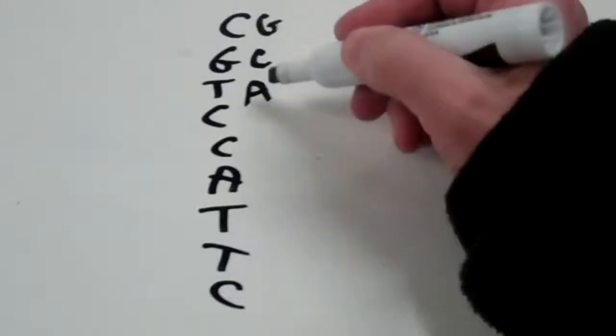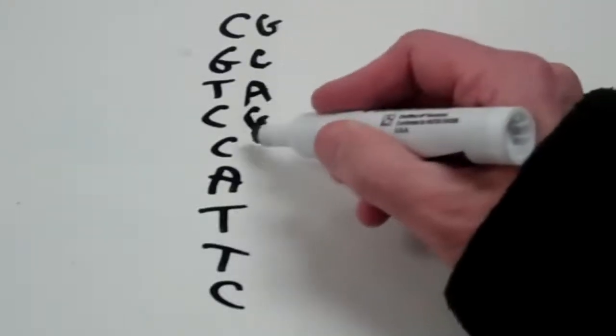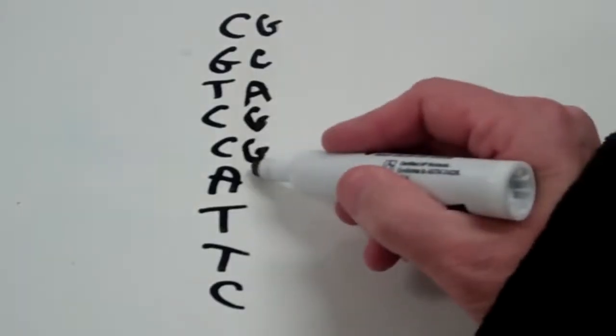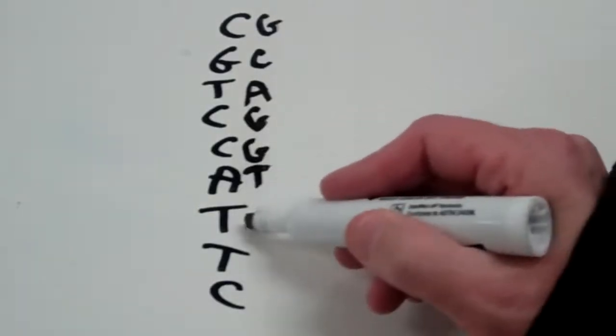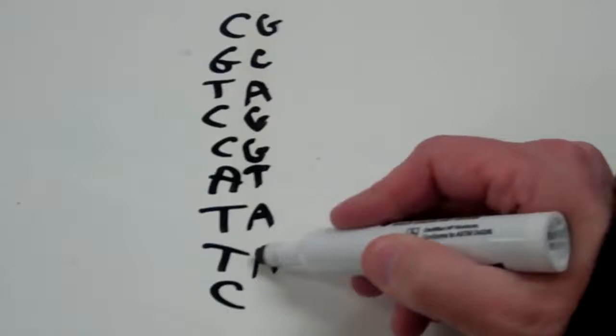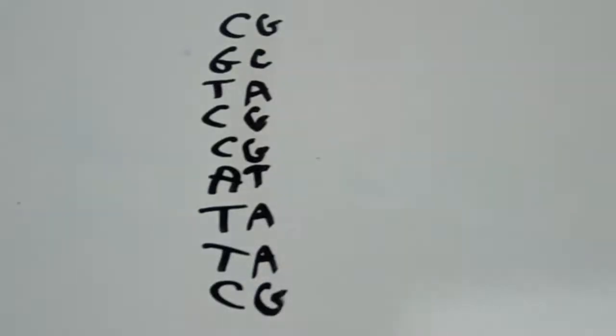That would bond in the complementary base pairing fashion. So that's how you would complete that: C's and G's go together and A's and T's go together, and that's pretty simple.